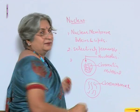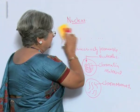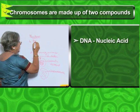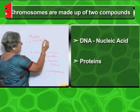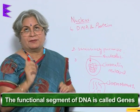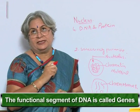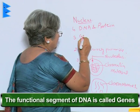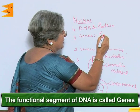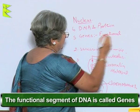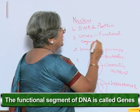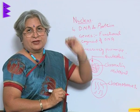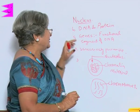These threads are called chromosomes. Chromosomes are very important. The chromosomes are made up of two compounds: one is a nucleic acid — the DNA — and protein. The functional segment of DNA is called a gene — not the jeans that you wear. Gene is the functional segment of DNA, and it is also the unit for inheritance. All the hereditary information which passes from parents to offspring is through genes.